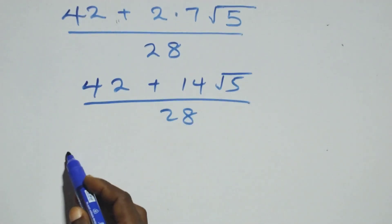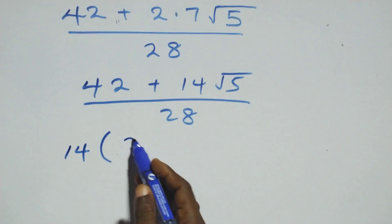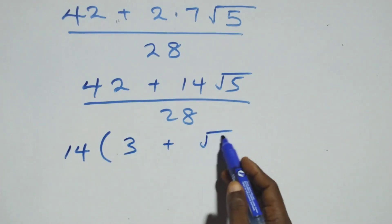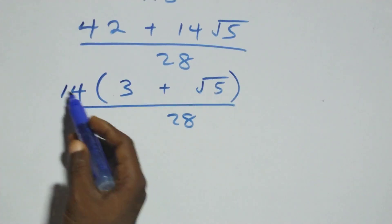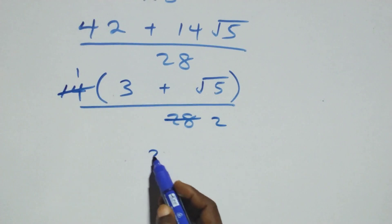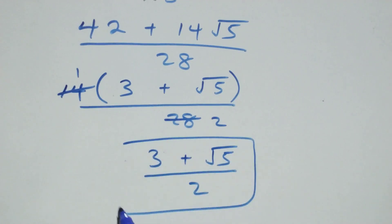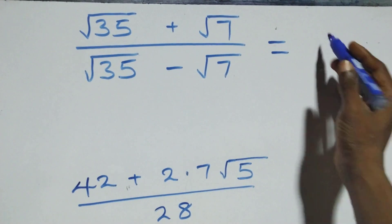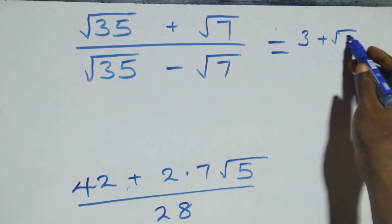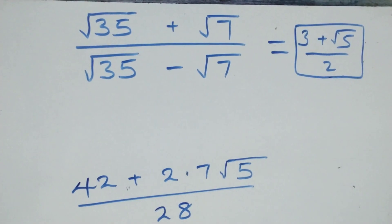Here we have 14 as a common factor, and we have 14 into brackets: here it means 3, then plus root 5, then over 28. Here 14 goes into 28 twice. And all we have becomes 3 plus root 5 over 2. That is the same thing as all we had in the first method. We can conclude that the simplified form of this given problem is 3 plus root 5 over 2.